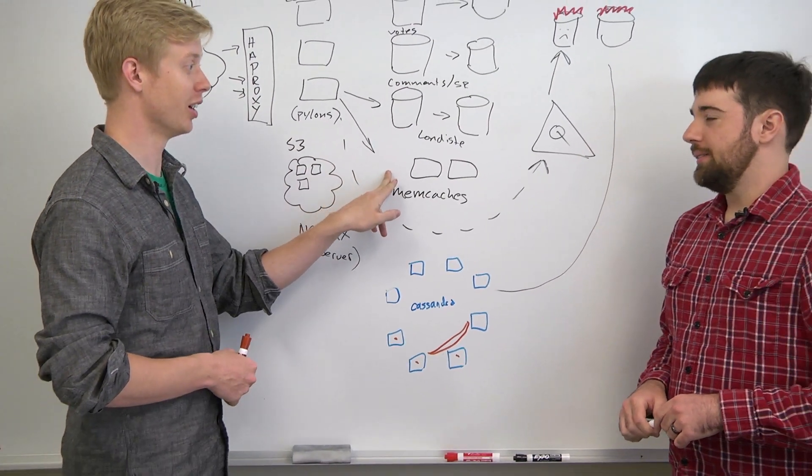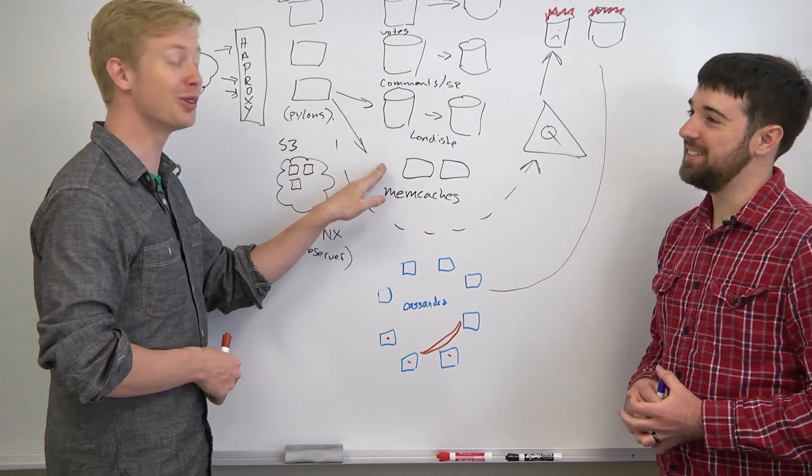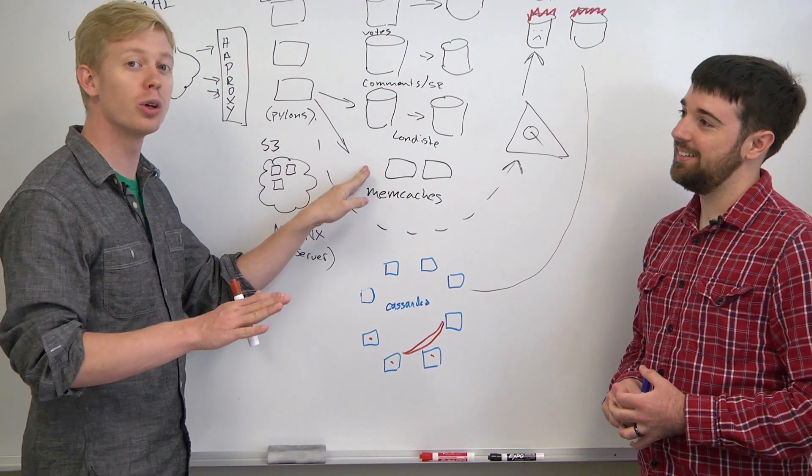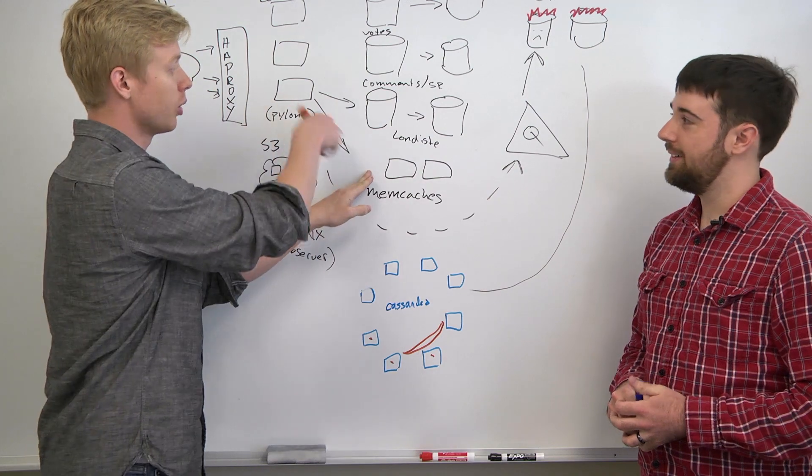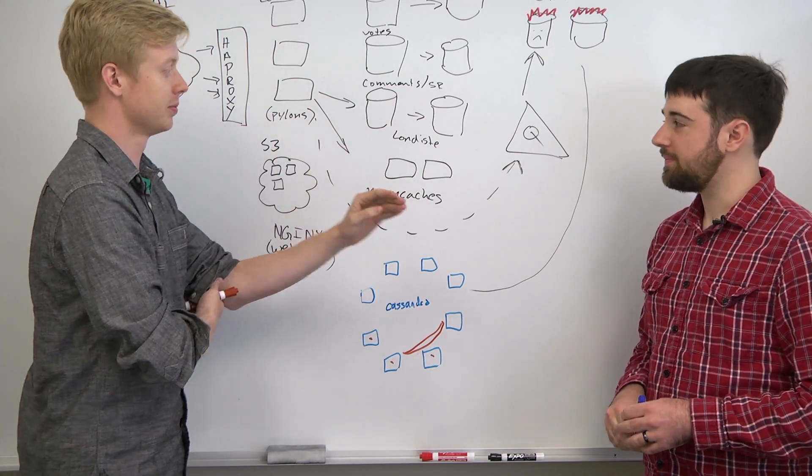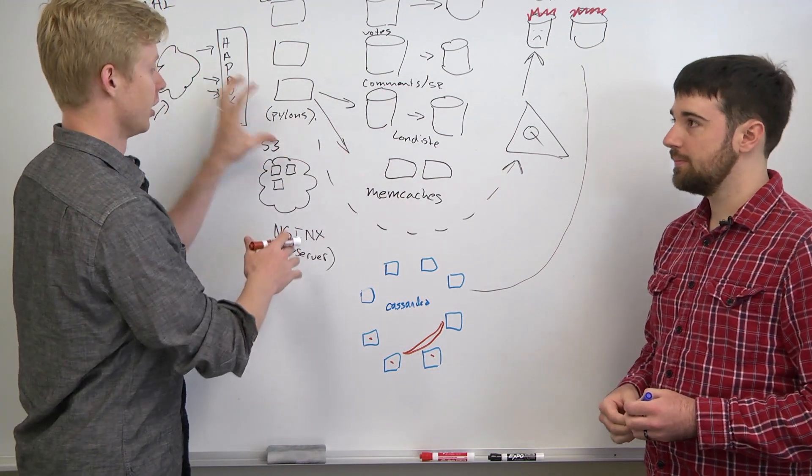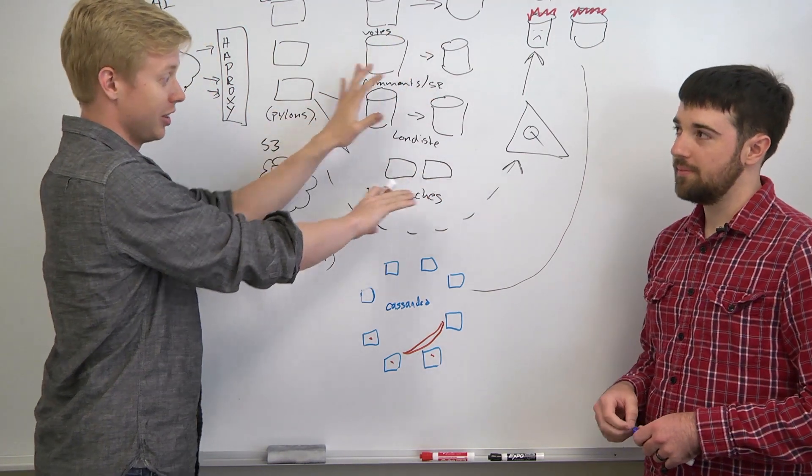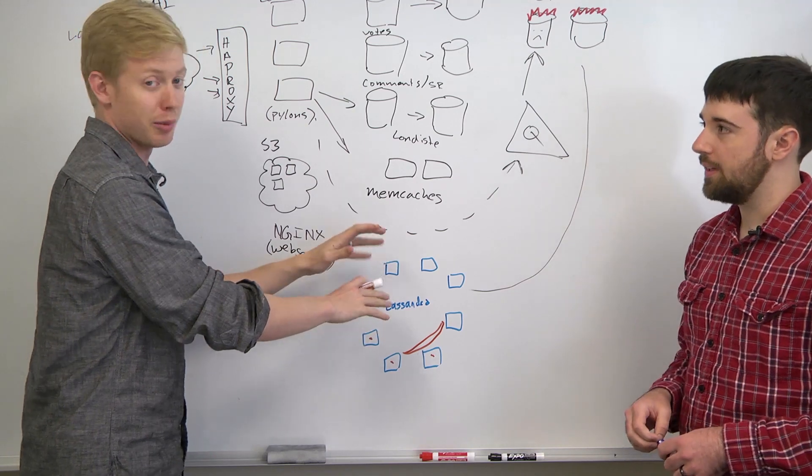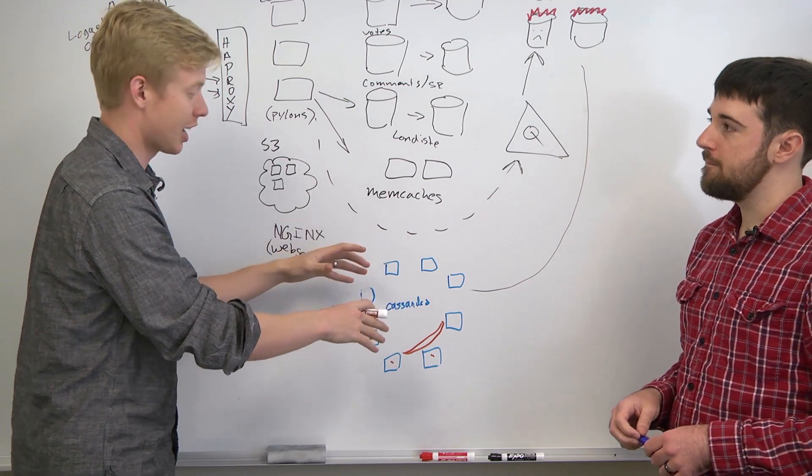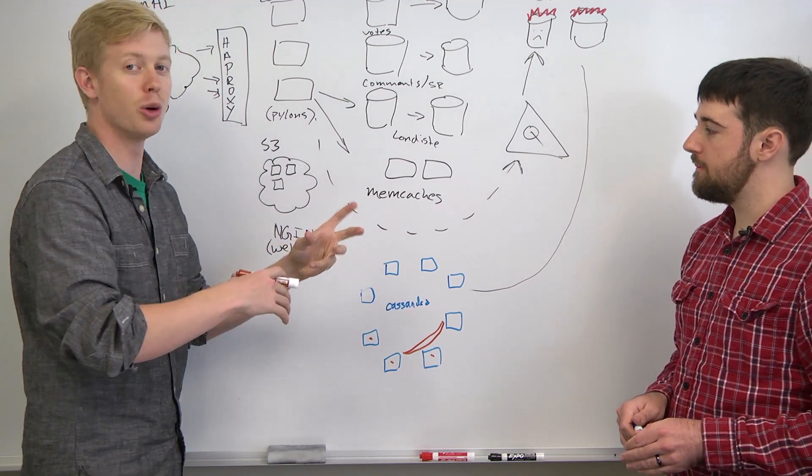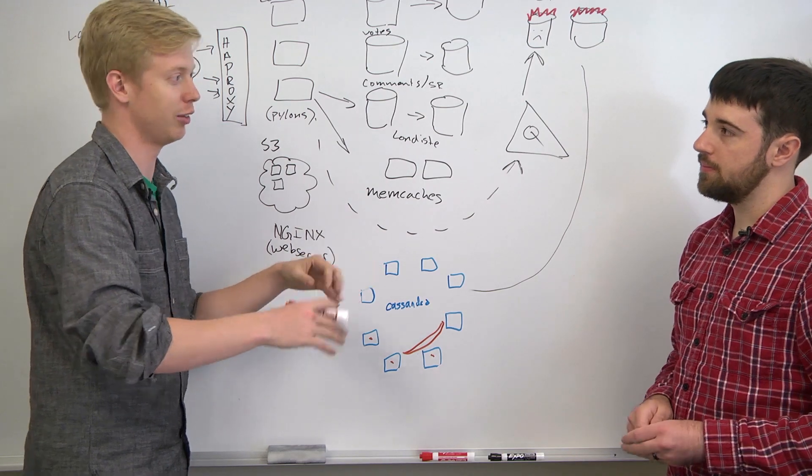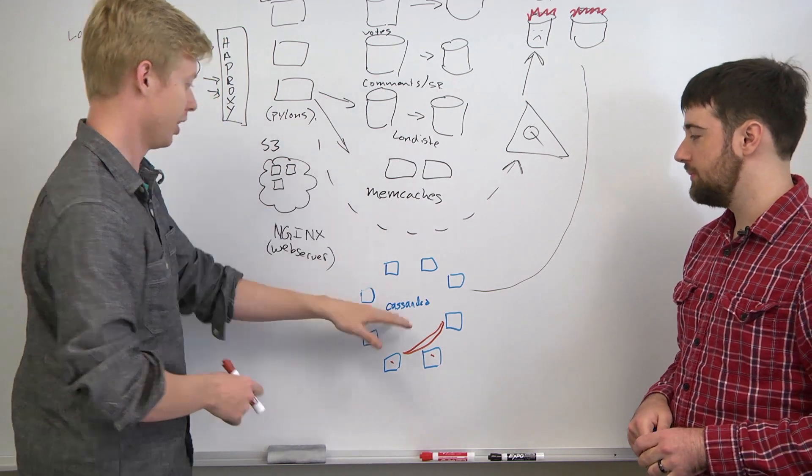We actually had this happen a couple times while I was there. You lose one memcache box or more likely you misconfigure it and the app servers don't see it anymore. All of a sudden your cache is not warm anymore and you've got users hitting the databases, pummeling the hard cache or the memcache DBs. All of a sudden your load profile completely changes and everything explodes. So that was a really nice improvement.